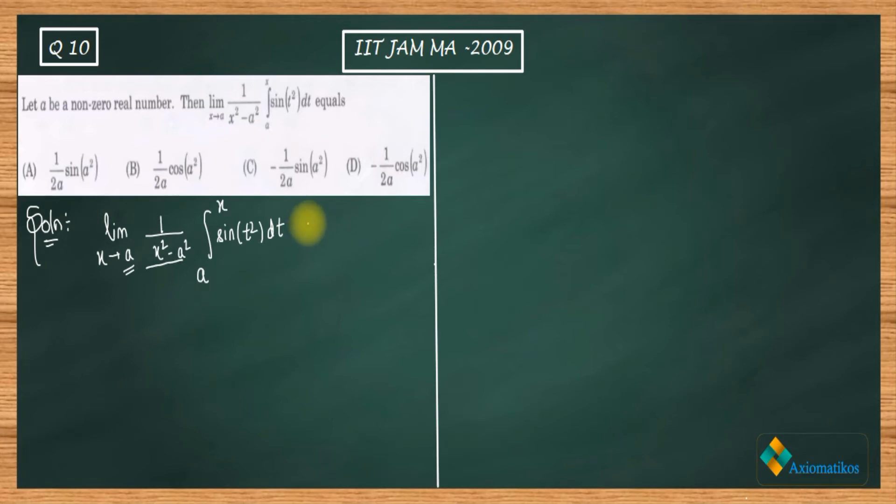From here, if I write this integral as limit x goes to a, integral a to x sine t squared dt over x squared minus a squared, I am getting 0 by 0. So 0 by 0 is an indeterminate form, and since it's an indeterminate form we got a hint that we can apply L'Hospital rule.